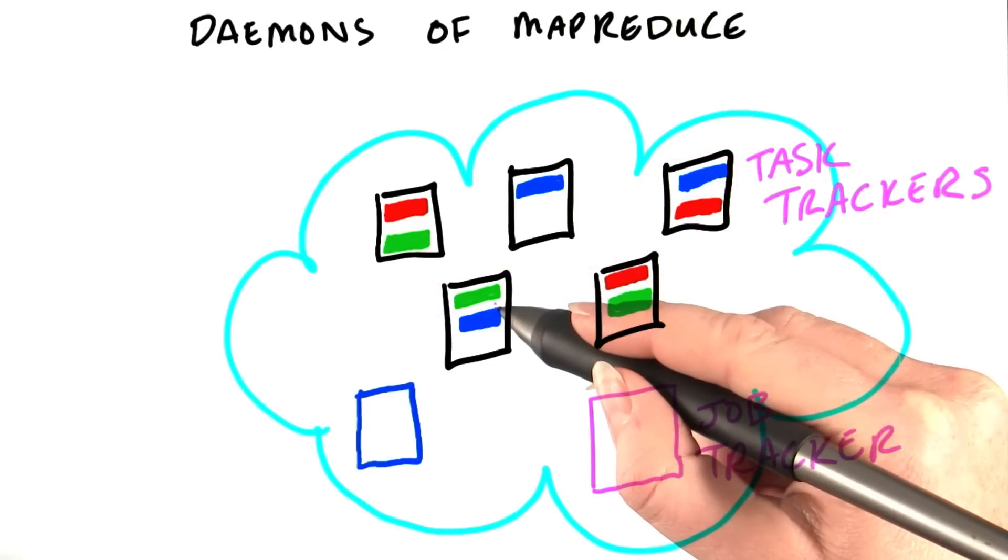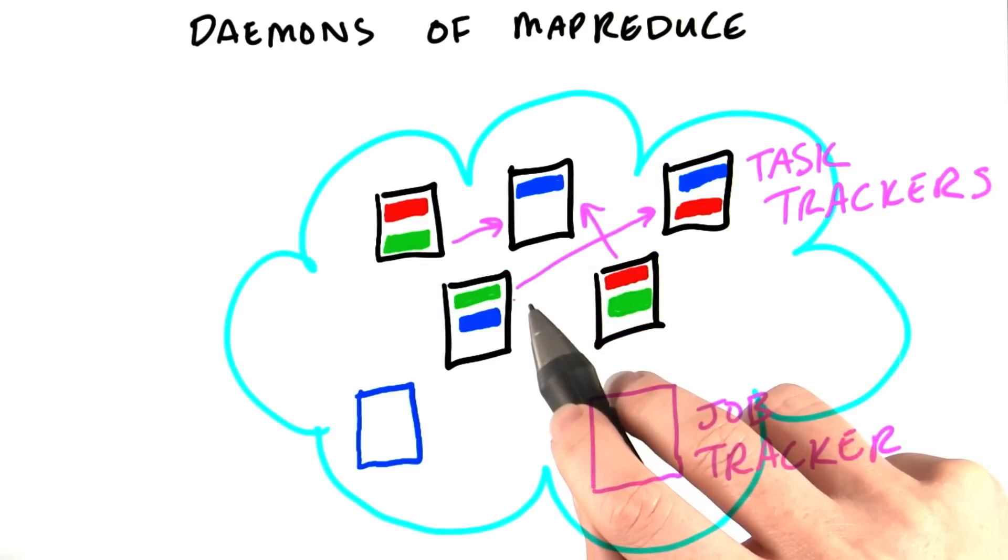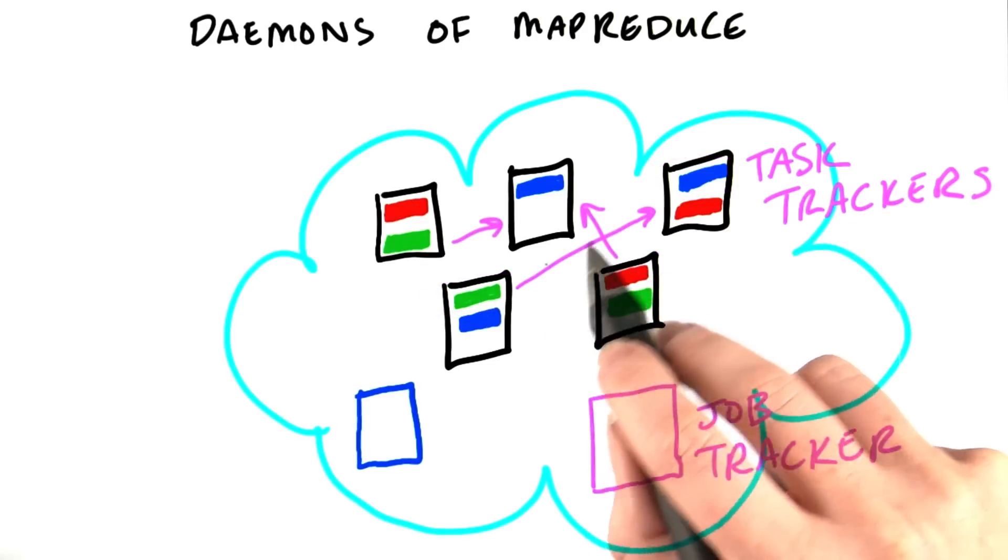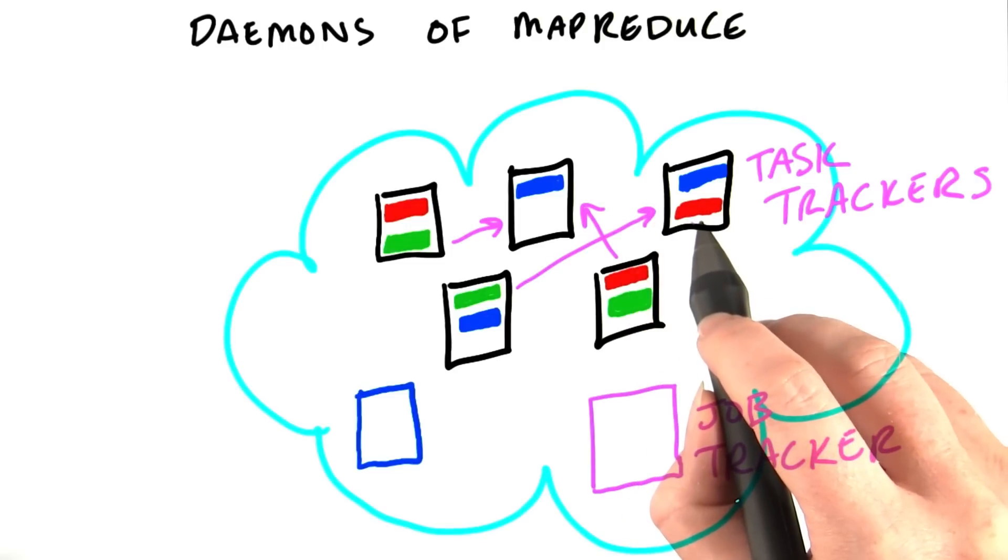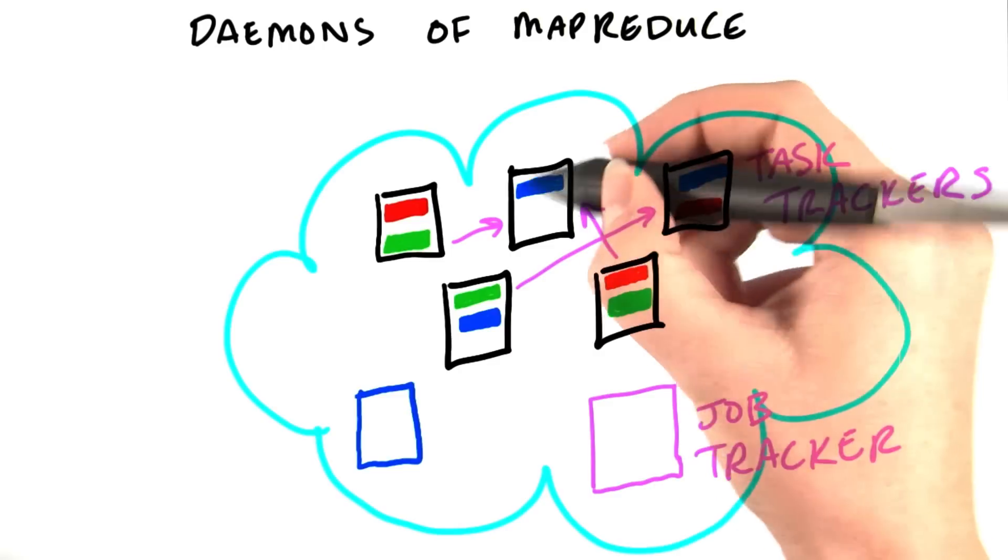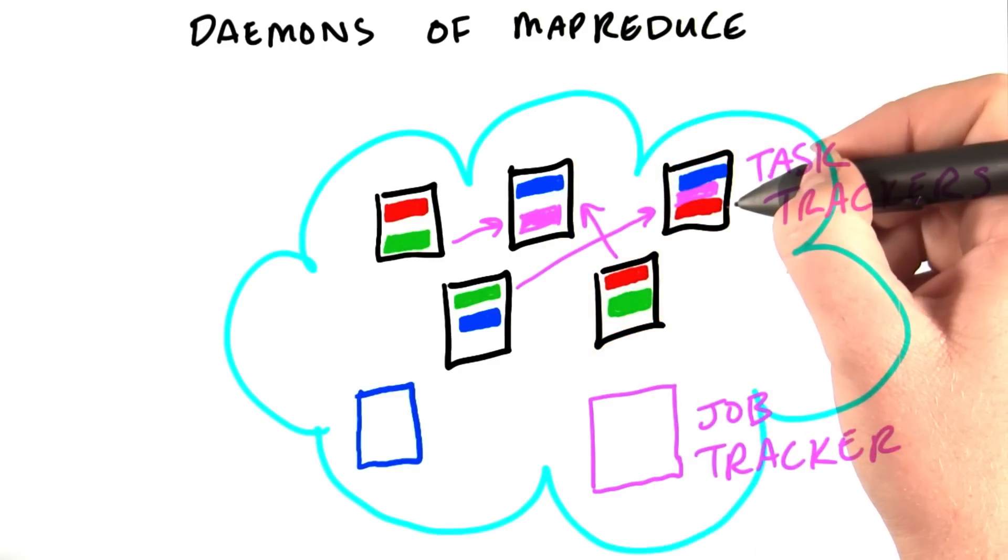So the mappers will read their input data. They'll produce intermediate data, which the Hadoop framework will pass to the reducers. Remember, that's the shuffle and sort. Then the reducers process that data and write their final output back to HDFS. So let's have Ian run a job on our cluster.